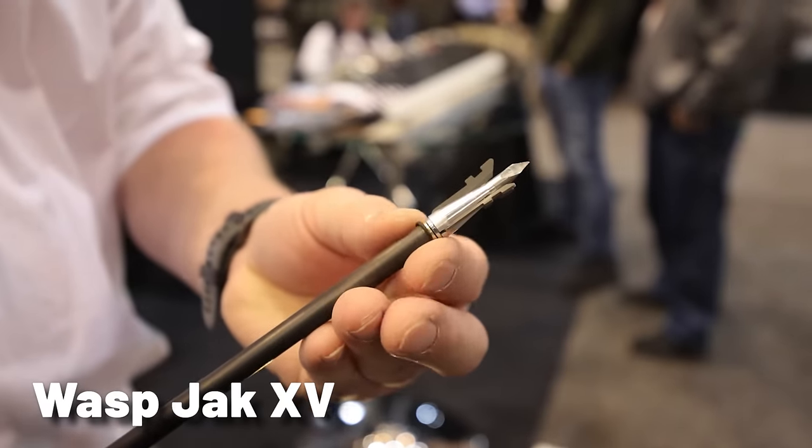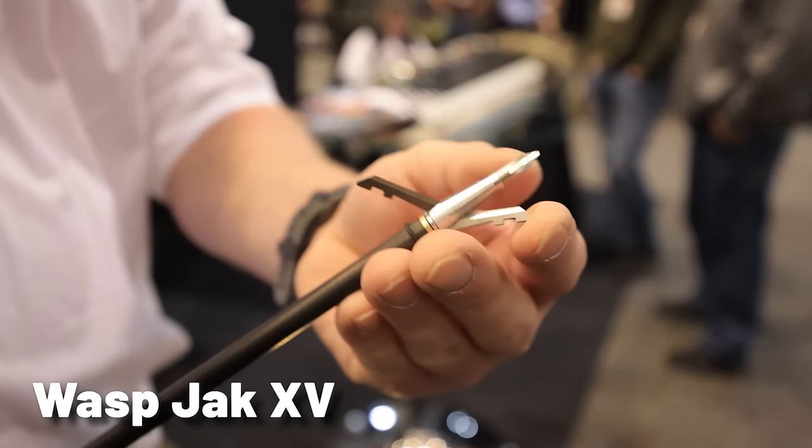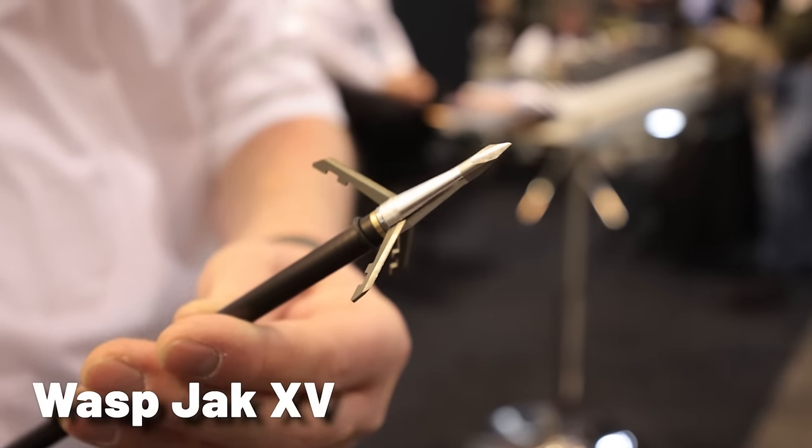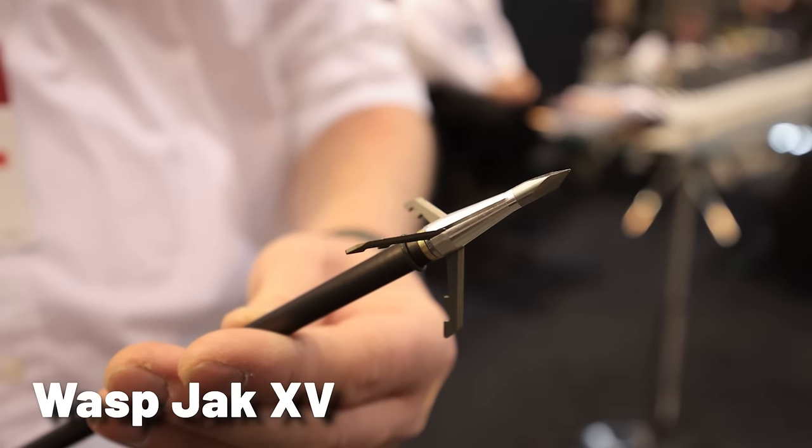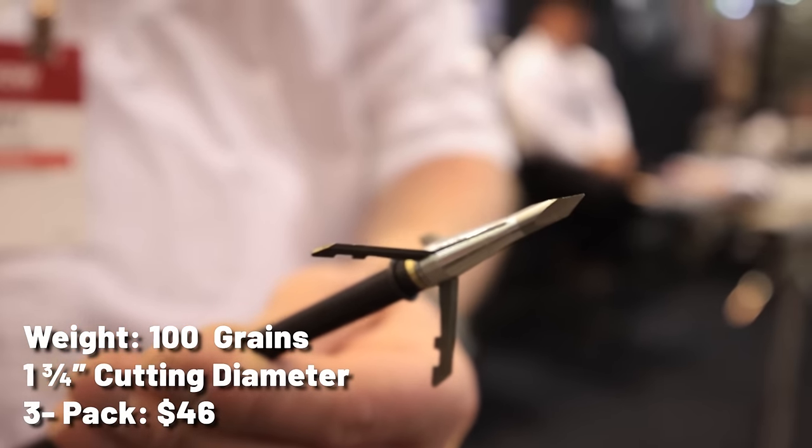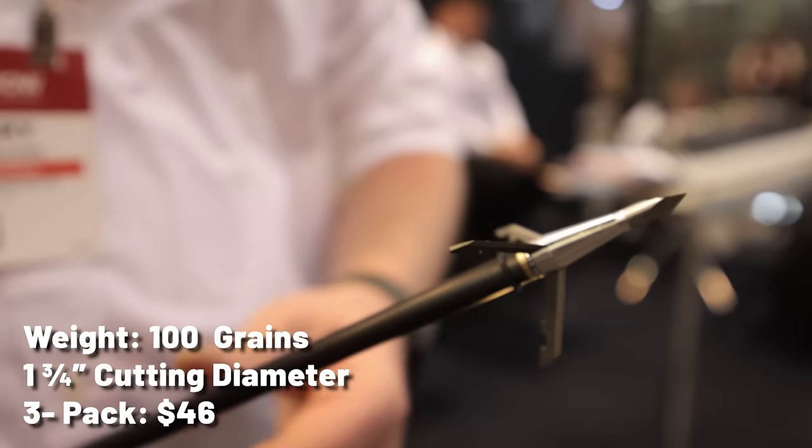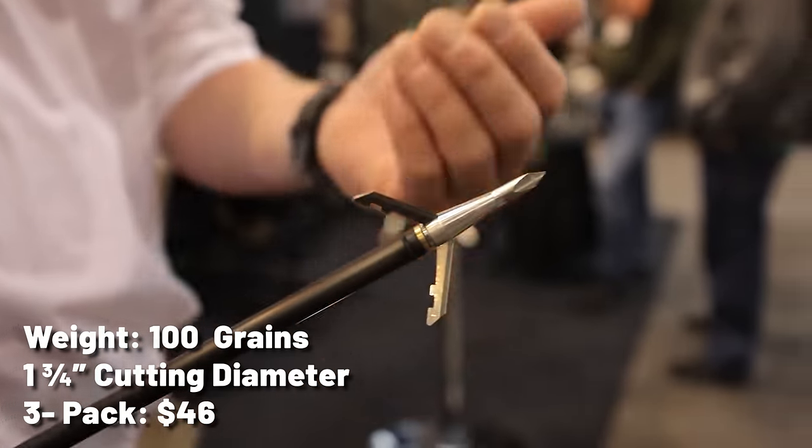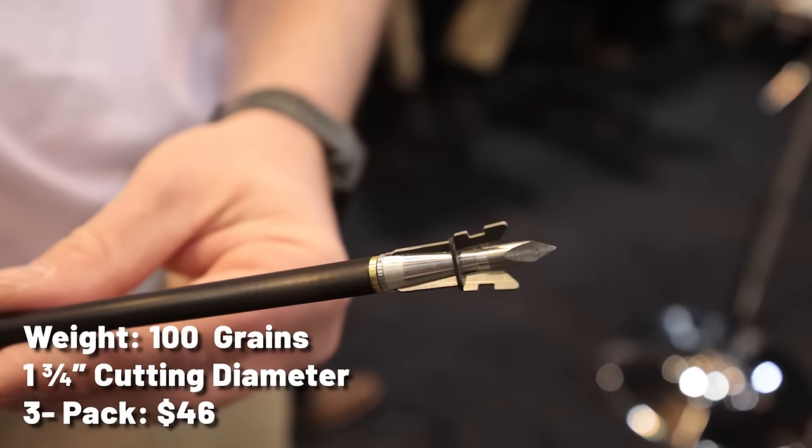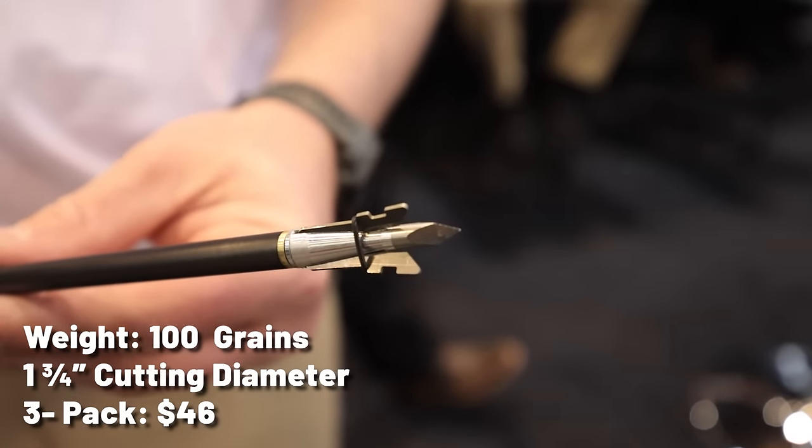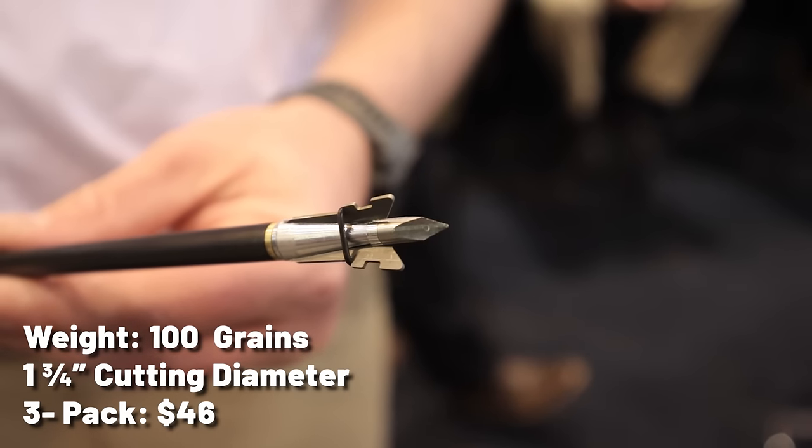Wasp Jack XV. Built on the popular jackhammer platform, the Jack XV is made from an aerospace-grade aluminum ferrule and is designed to work with any bow or crossbow, including modern crossbows that shoot in excess of 400 feet per second. The Jack XV features three 36 thousandths thick blades that are held in place by an O-ring and deploy to a wide 1.75-inch cutting diameter on impact. Available in 100 grains, a three-pack of these made-in-America broadheads will run you around $46.